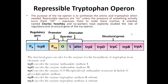The tryptophan operon is an example of a repressible operon. It has a typical operon structure with five genes — tryptophan E, D, C, B, and A — which encode enzymes required for the biosynthesis of tryptophan from chorismic acid. The operon structure includes a promoter for the regulatory gene, then a promoter for the structural genes, then an operator, then an attenuator.